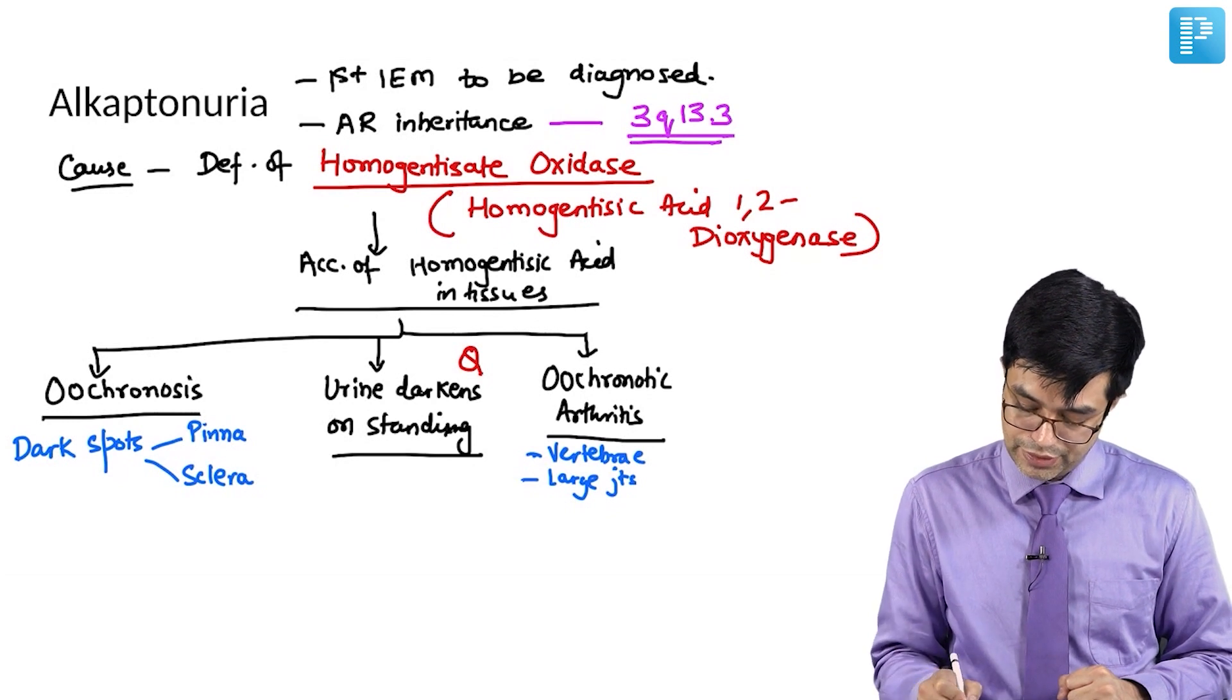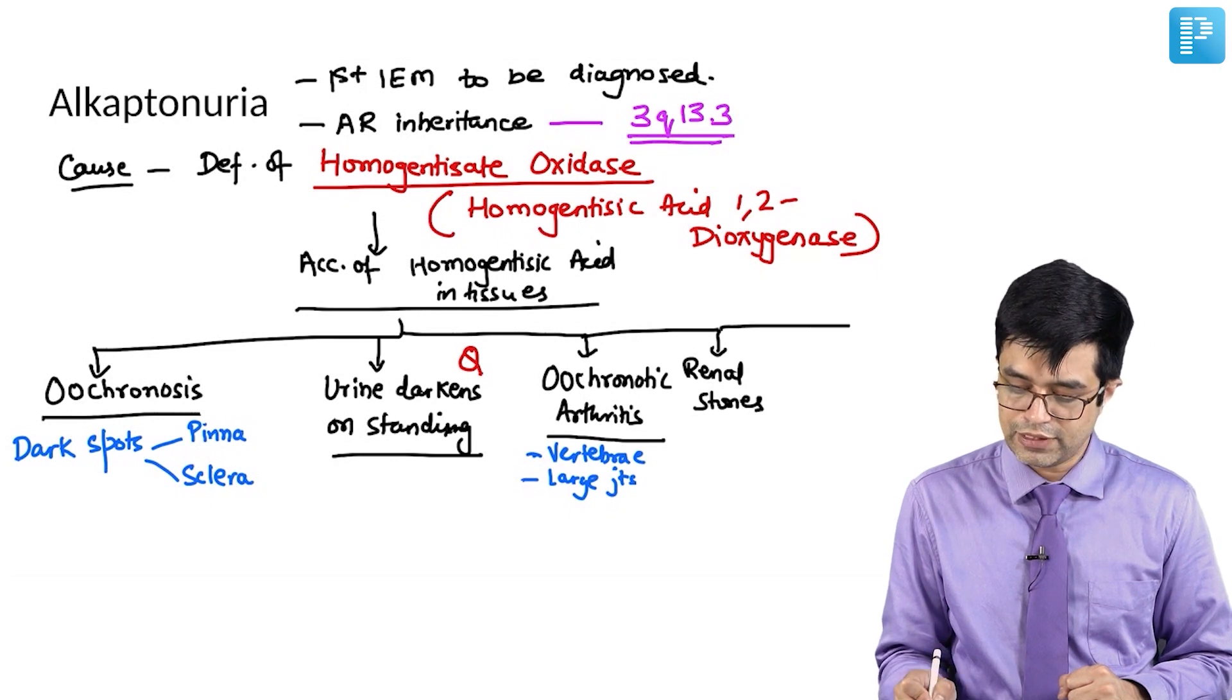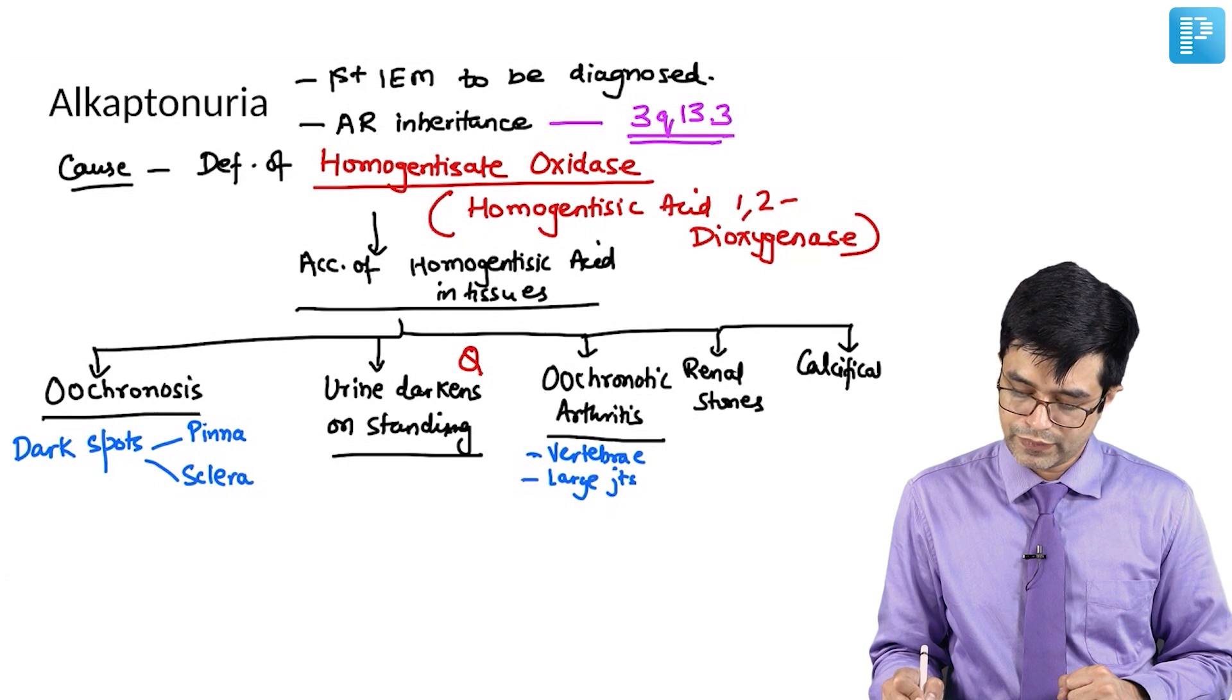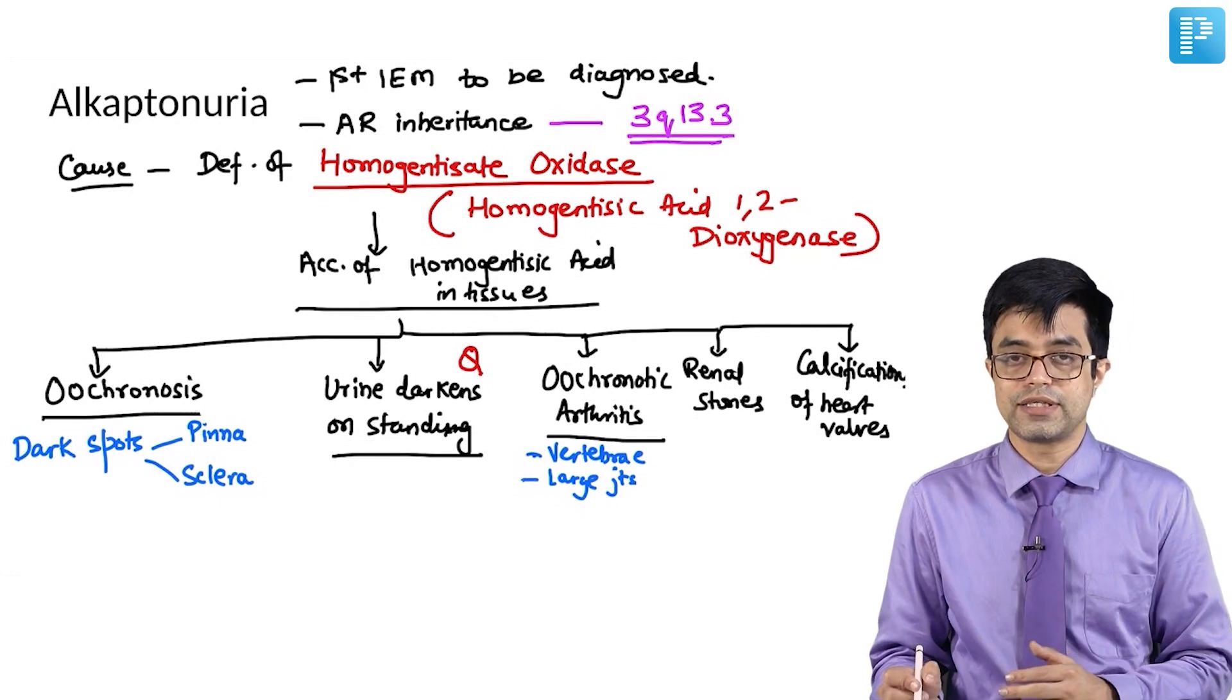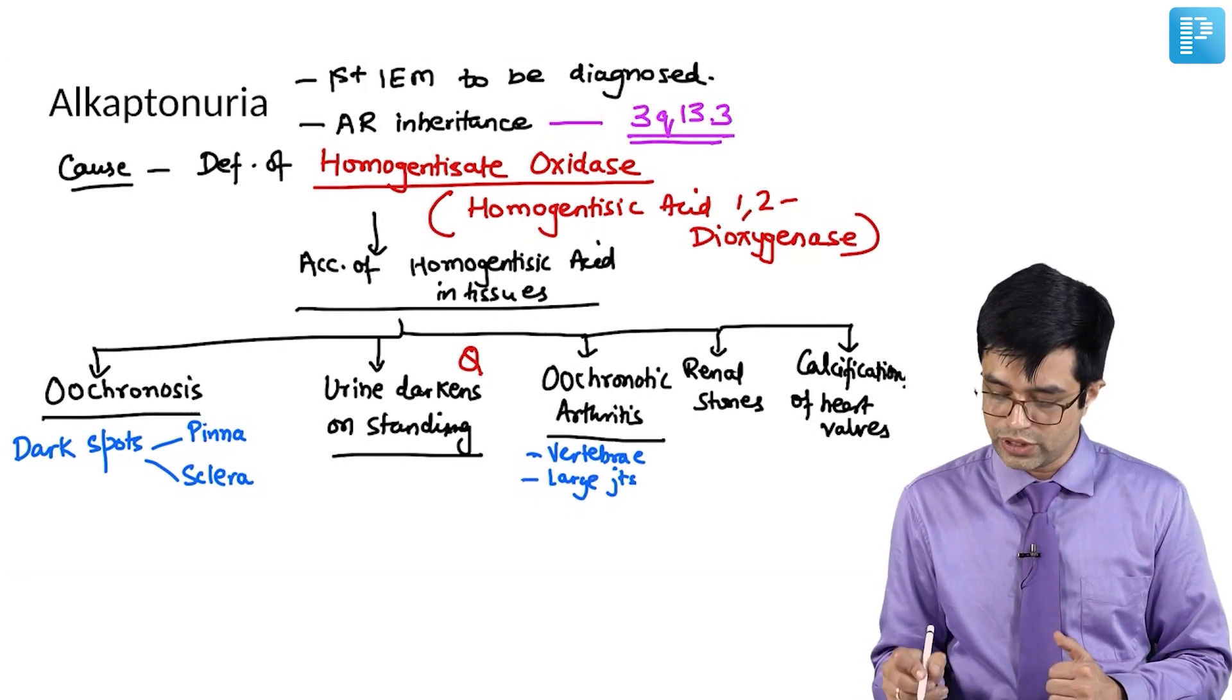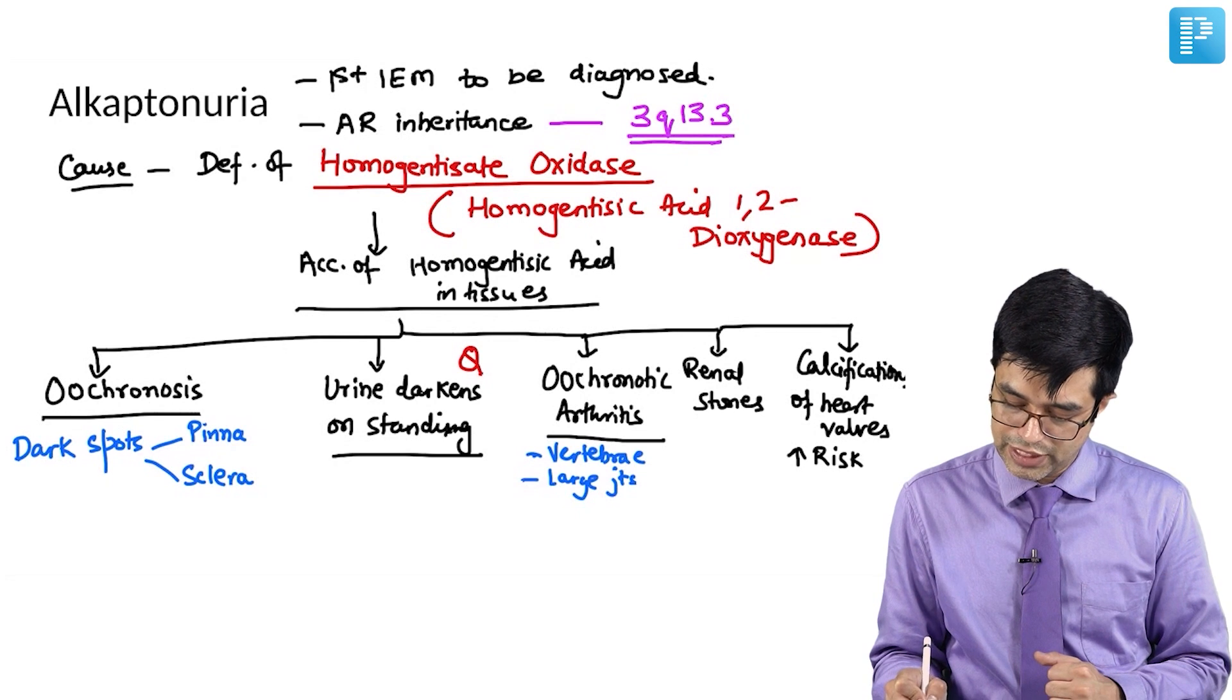Then there will be occurrence of renal stones in these patients. Nephrolithiasis can develop and there can be calcifications of heart valves and calcification can also sometimes extend to the intimal layer of the large vessels and sometimes coronary arteries, leading to increased risk of myocardial infarction in some of these patients.